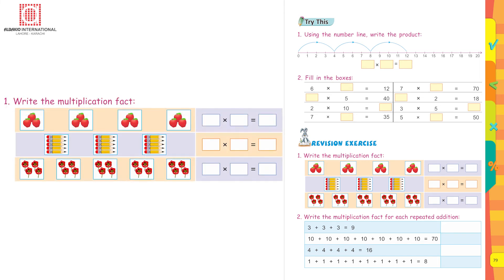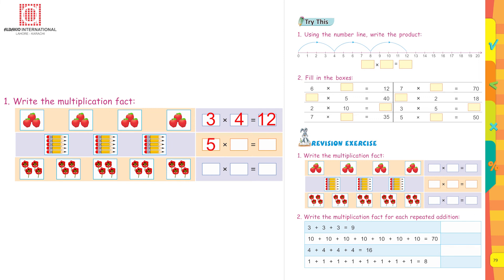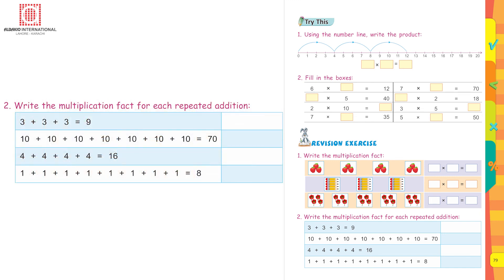Revision exercise: Write the multiplication fact for the first picture. How many cherries in each picture? Three cherries. How many pictures? Four. So 3 into 4 equals 12. For the next picture: five pencils in one set and three sets, so 5 into 3 equals 15.